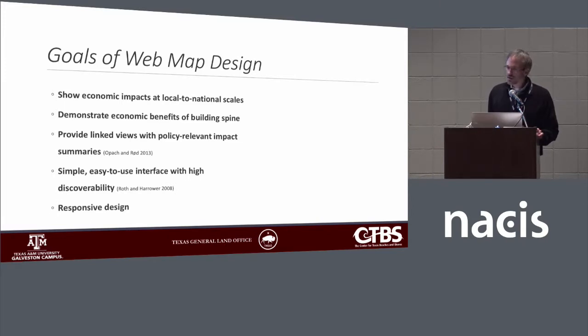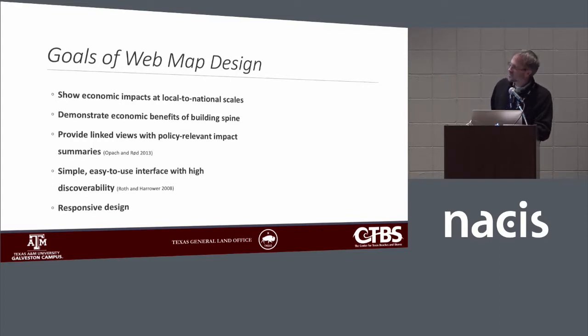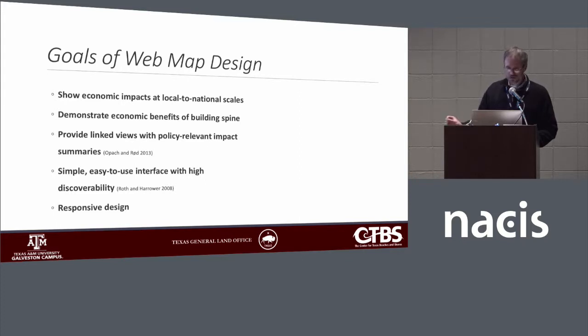I was brought in because the General Land Office and our PI wanted a web map that would help communicate both surge hazards in general and some of the potential benefits of building this coastal spine structure. Some ADCIRC modeling was done to look at how building the spine would affect surge scenarios. I had a number of goals: show economic impacts at local to national scales, communicate knock-on effects like gas prices and national economy, demonstrate the economic benefits of the spine investment, and provide linked views with policy-relevant summaries. We also wanted a simple, easy-to-use interface with high discoverability, using responsive design for mobile devices.